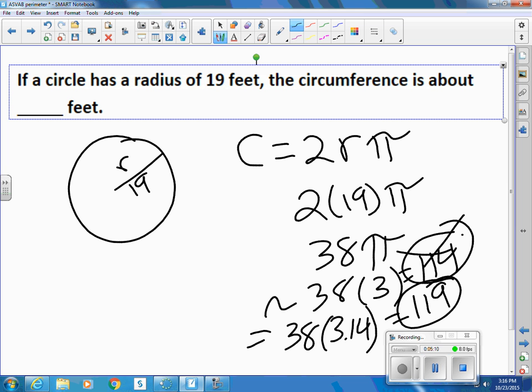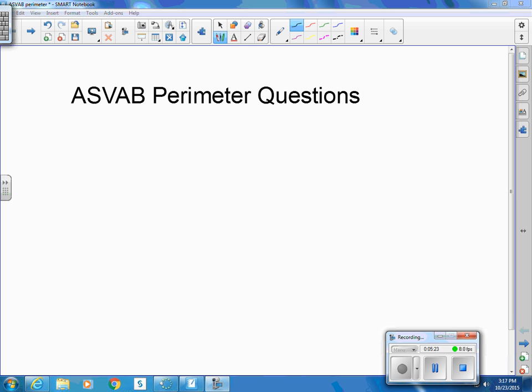And then you can multiply with a calculator to see what it is exactly, and then you can know if you make a calculator error, it should be close to that. And if it's not, then you maybe typed the wrong button. So that's just some practice on perimeter, some questions you might see on the ASVAB test.